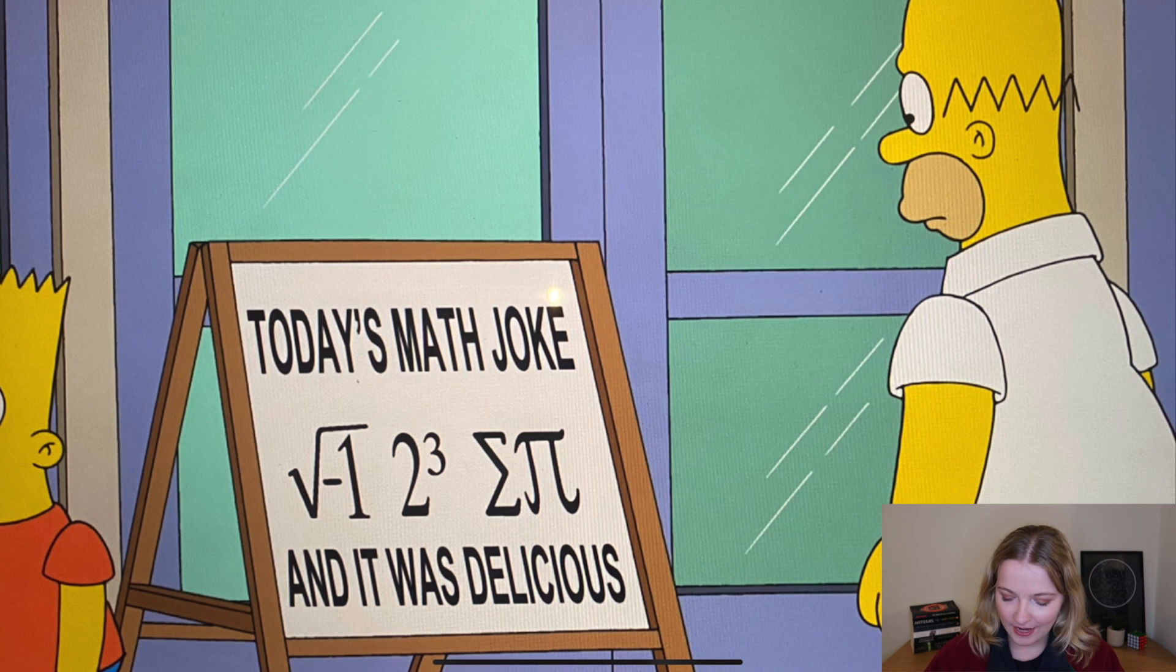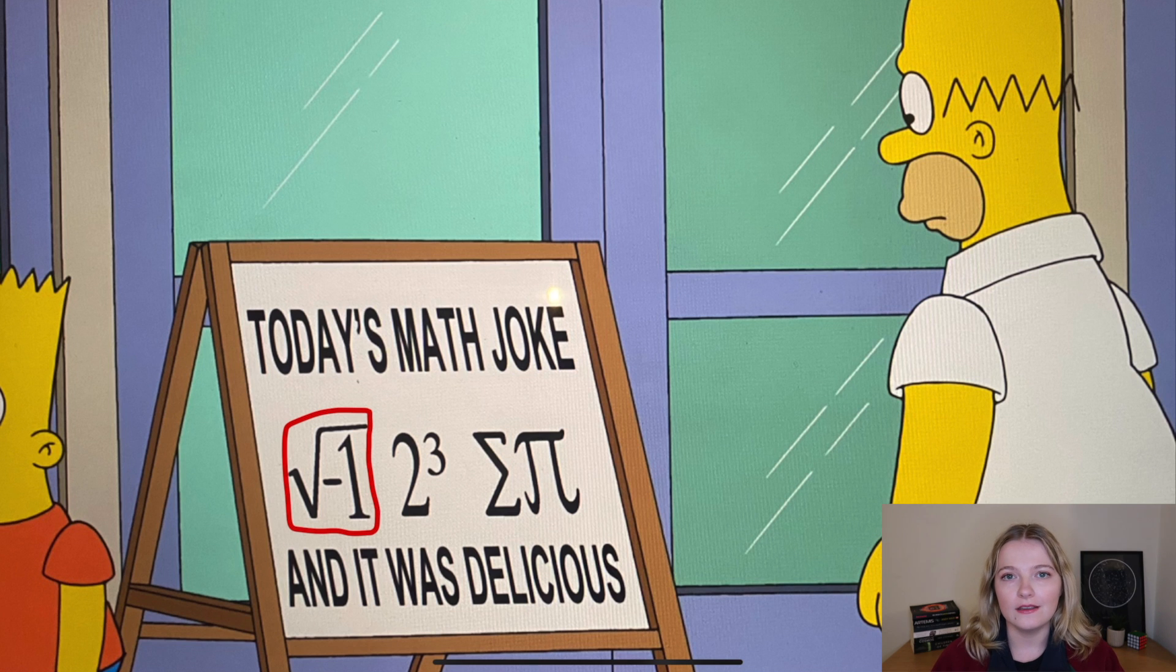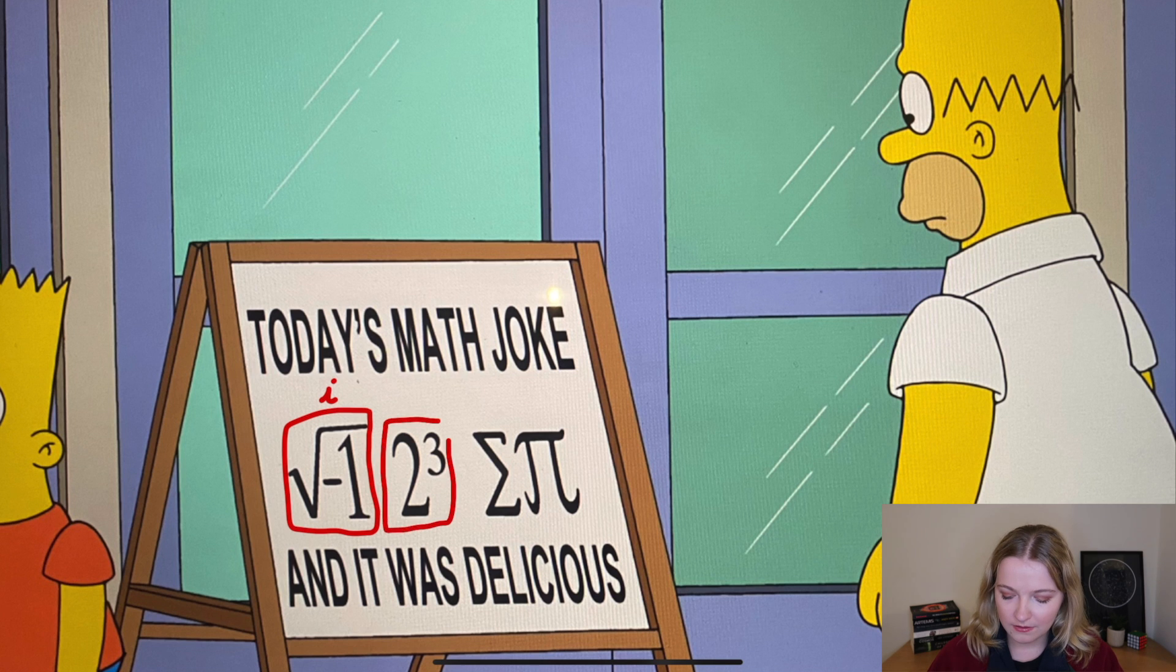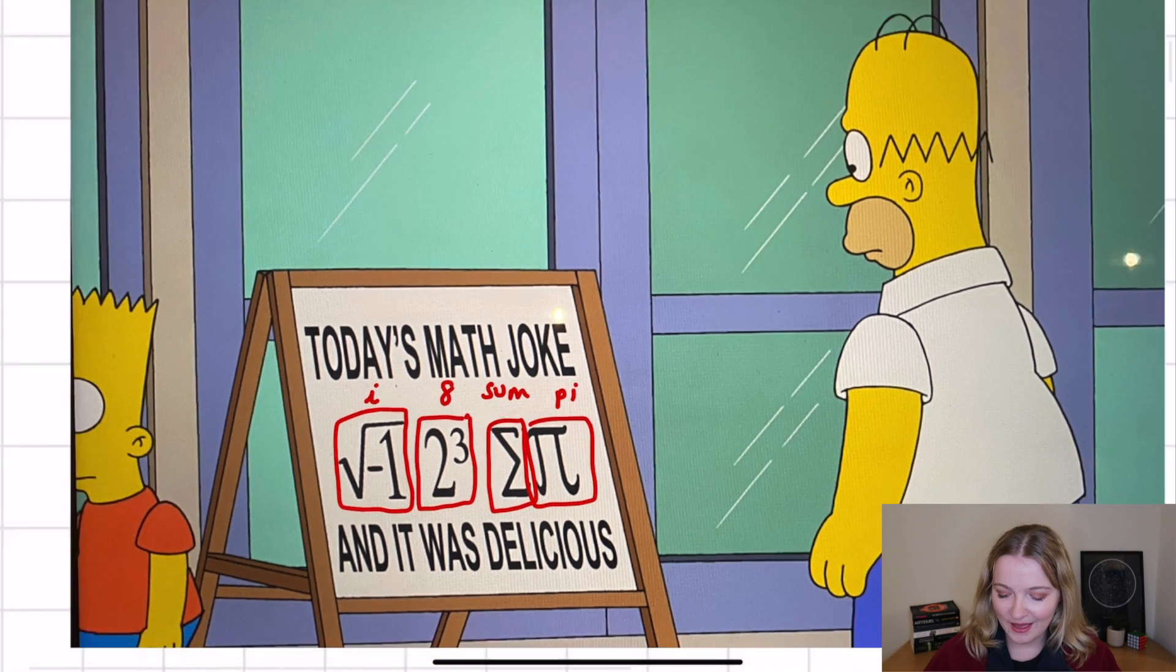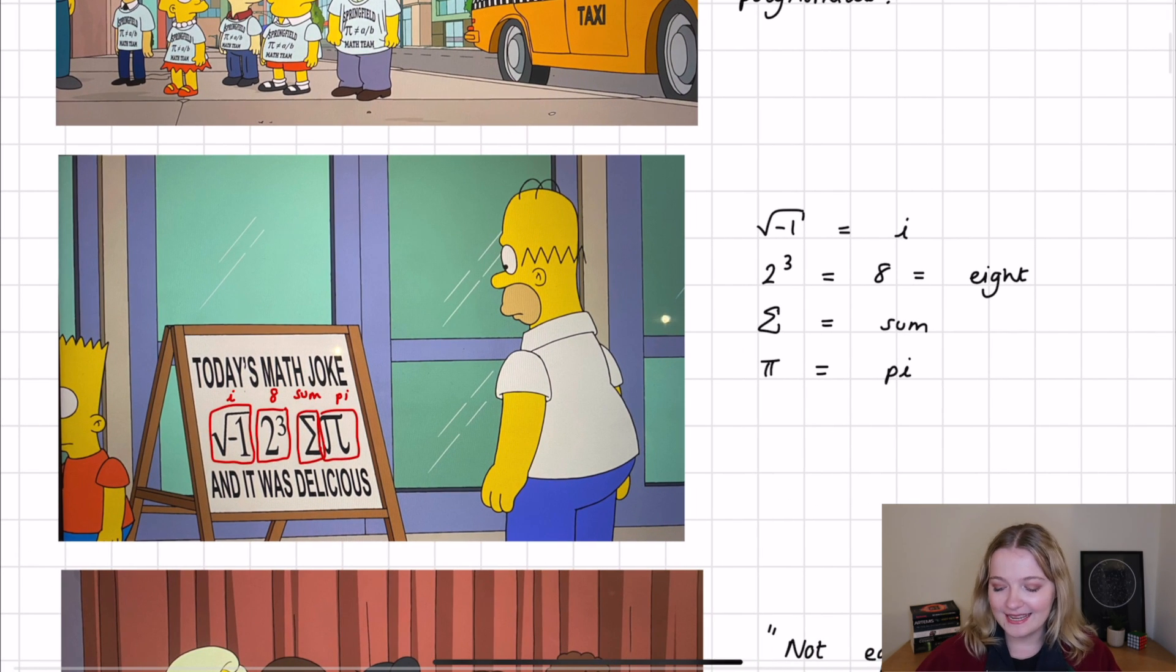And all this is saying is we have the square root of minus 1, which hopefully if you know some sort of maths, you'll know that that's i, that's the imaginary number. Then we have 2 cubed, which is 8. We have a sum, so this is known as sum. And then we have Pi here as well. And obviously if you say that out loud, it says I ate some pi. So that was the maths joke at the start of the episode, which yeah, a classic one in mathematics. On the topic of maths jokes, pop your favourite maths joke in the comments section because I'd be curious to see what everyone's favourites are.